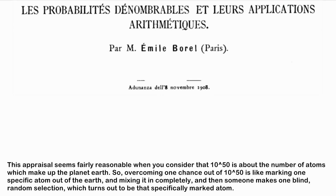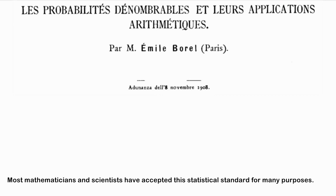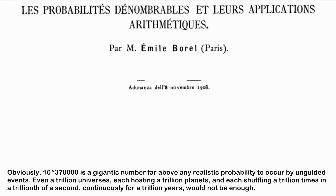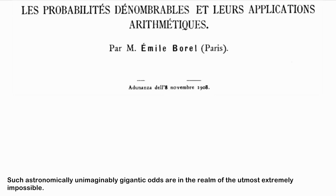10 to the 50th power is roughly the number of atoms that make up planet Earth. So overcoming 1 chance out of 10 to the 50th power is like marking one specific atom out of the Earth, mixing it in completely, and then making one blind random selection that turns out to be that specifically marked atom. Most mathematicians and scientists have accepted this statistical standard. Obviously, 10 to the 378,000th power is a gigantic number far above any realistic probability. Even a trillion universes, each hosting a trillion planets, each shuffling a trillion times per trillionth of a second for a trillion years, would not be enough. Such astronomically unimaginable odds are in the realm of the utmost extreme impossibility.